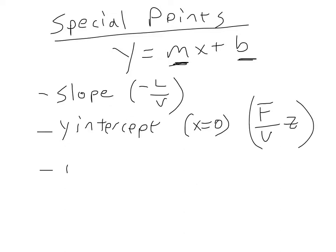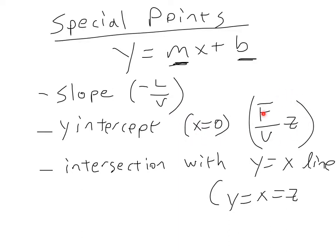That is F over V times Z. And then finally, the intersection with the Y equals X line. So we've drawn these Y equals X line. Well, that's just simply Y equals X equals Z. So this line here, this operating equation, or operating line, has a slope of negative L over V. It intercepts the Y at X equals zero, and at this particular Y value. And the point where it crosses the Y equals X line is equal to Y equals X equals Z. Or in other words, we just have to find out this point, the Z value. And once we know the Z value, we know where this operating line crosses the Y equals X line.